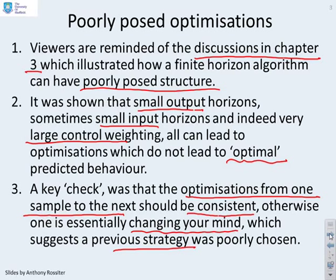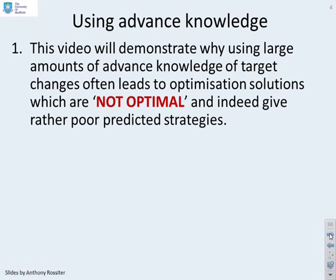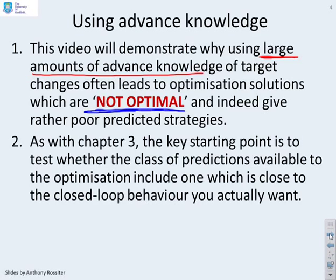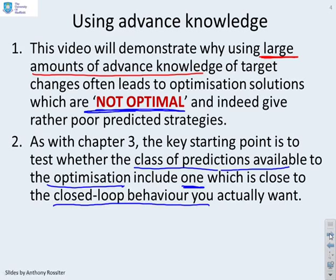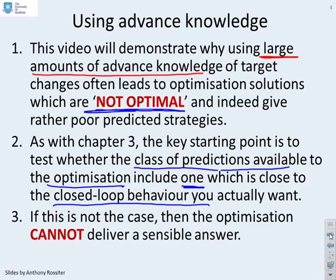We are going to use the same insight now with advanced knowledge. This video will demonstrate why using large amounts of advanced knowledge of target changes leads to optimization solutions which are not optimal and will give rather poor predicted strategies. As with Chapter 3, the key starting point is to test whether the class of predictions available to the optimization includes one which is close to the closed-loop behavior you actually want. Because if within your class of predictions you don't have one close to what you want, then clearly you can't get it, and the optimization is unable to deliver a sensible answer.